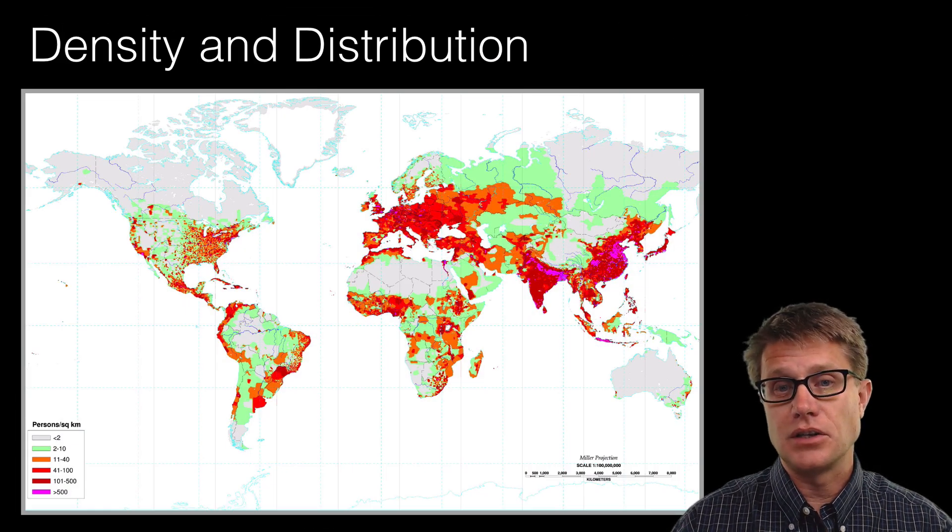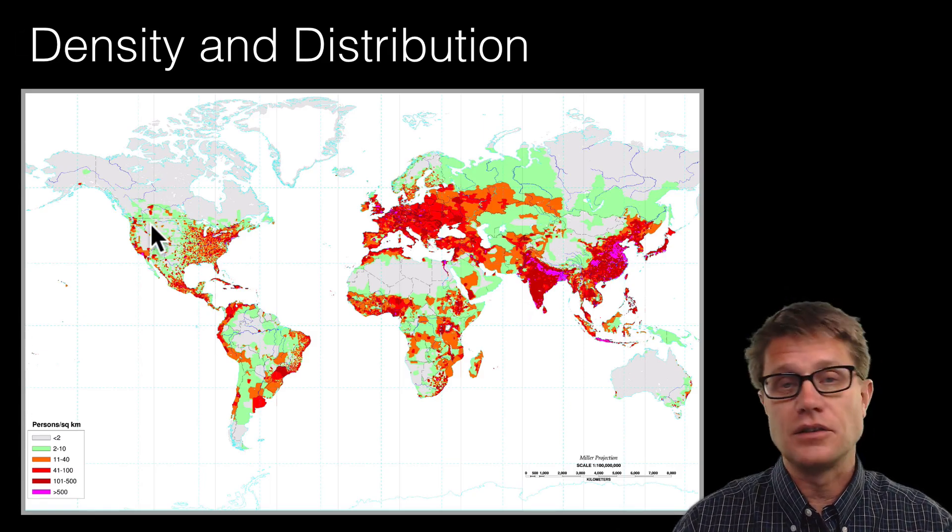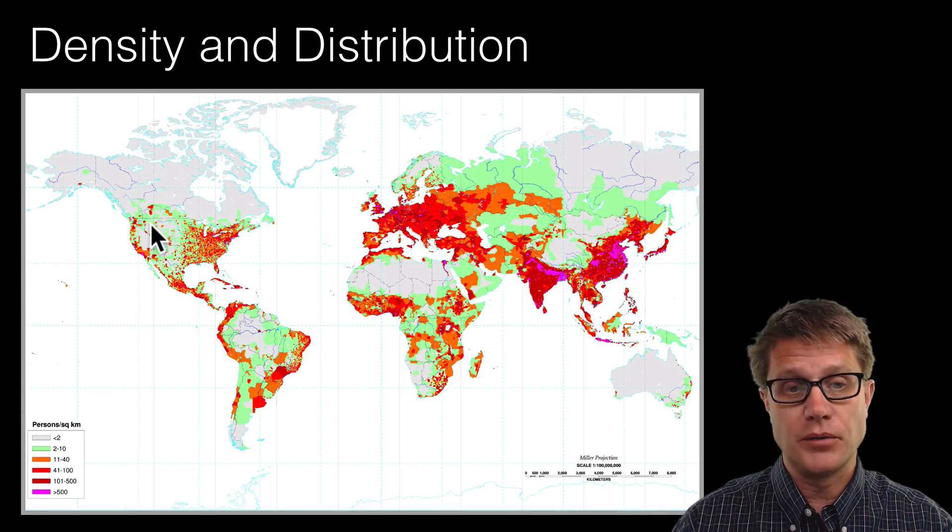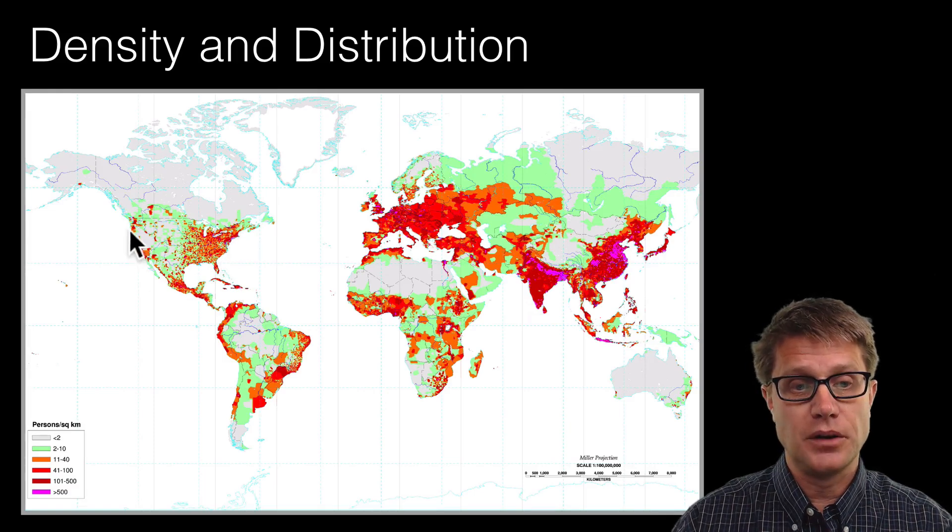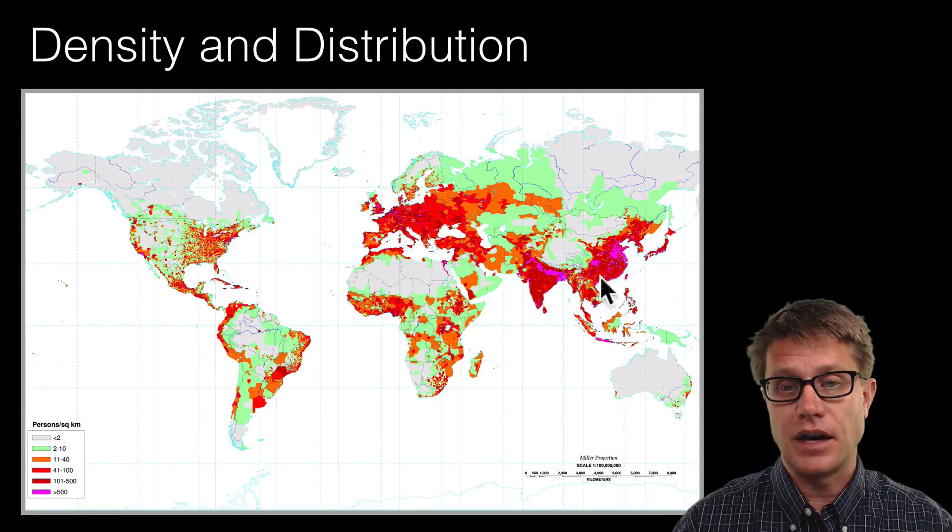And so if we start with human density and distribution it is all over the place. So if we look here in Montana it is less than two people per kilometer. If we look in the US there are going to be way more people on the coasts, way more people in the northeast, way more people in western Europe and way more people in southeast Asia.